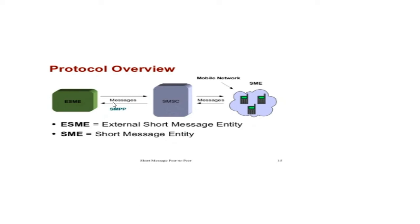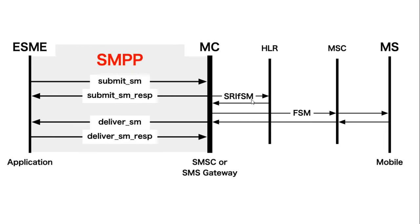In SMPP terminology, ESME stands for External Short Message Entity — the SMPP client that registers with the SMSC. It sends messages to the Short Message Entity, which is the destination mobile number. ESME is essentially the application developed by external developers who want to send bulk SMS. There will be an SMPP server running on the SMSC side.